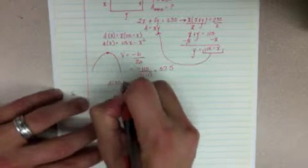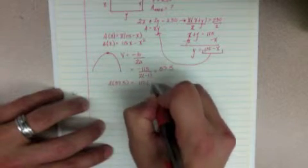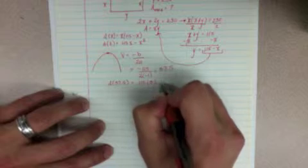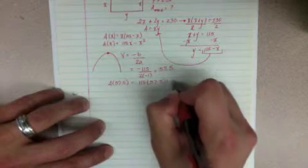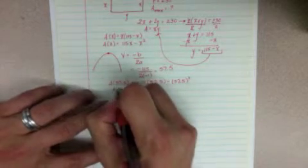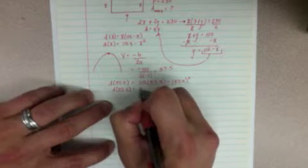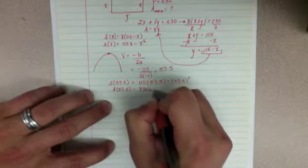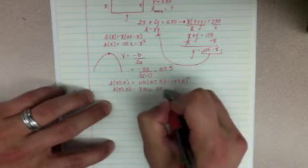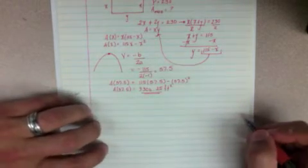So the value of the function of 57.5 is equal to 115 times 57.5 minus 57.5 squared. And when you do the math, you should get 3,306 feet squared. And that's how you do that one.